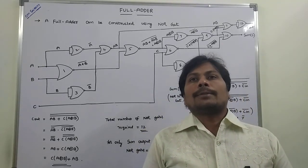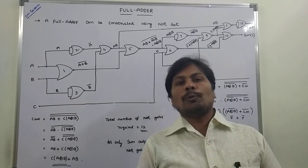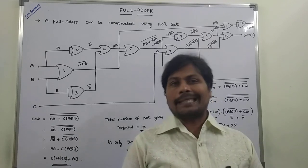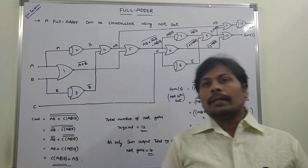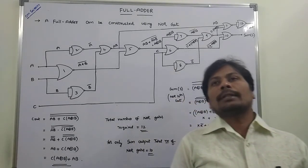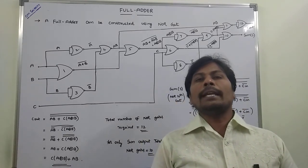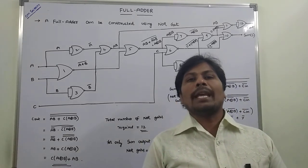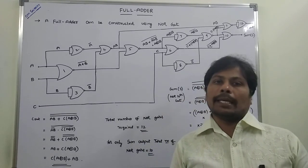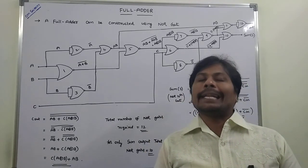The sum expression of the full adder is: S = A XOR B XOR C. The second output, carry output, is: C_out = C·(A XOR B) + AB.